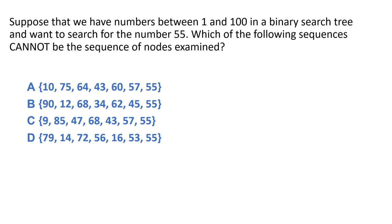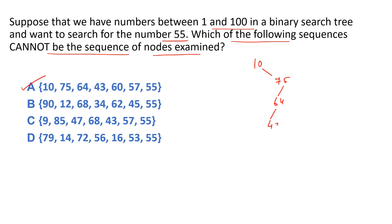Is question mein kaha ja raha hai: hamare paas 1 se lekar 100 tak numbers hain aur 55 search karna hai. Aapko batana hai which sequence of nodes examined is not possible. A option mein: 10 → 75 (right) → 64 (left) → 43 (left) → 60 (right) → 57 (left) → 55 (left). Koi bhi BST property violate nahi hui — chhote node left mein, bade right mein. Toh A option correct (valid) hai.